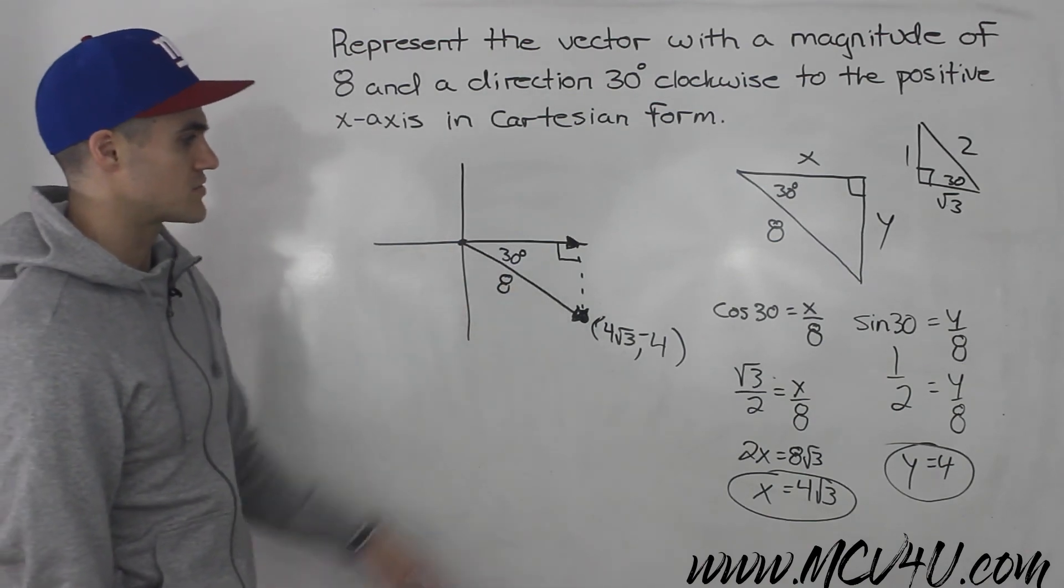So we know this is going to have a y value of negative 4. And that is this vector represented in Cartesian form, 4 root 3 and negative 4.